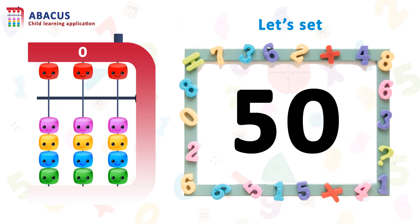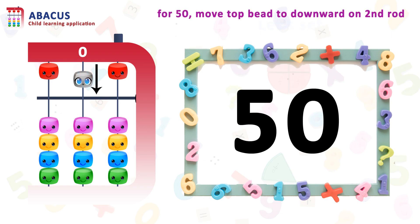Let's reset and go to the next number. Here we have the number 50. So let's set 50. For 50, we have to move the top bit downward on the tens column. It's easy, right?